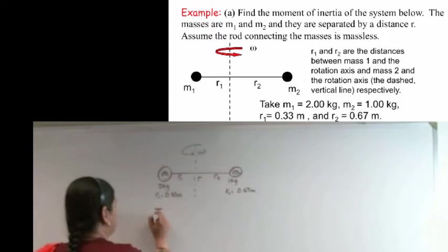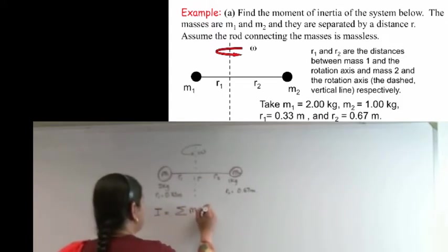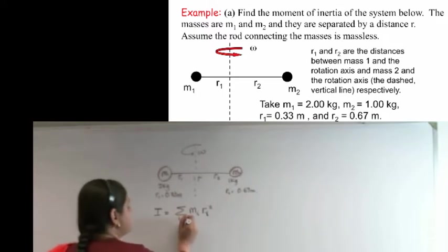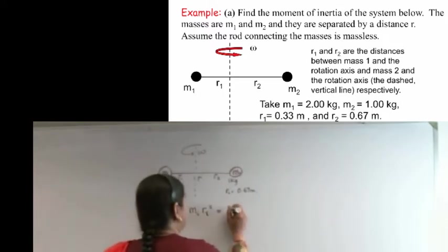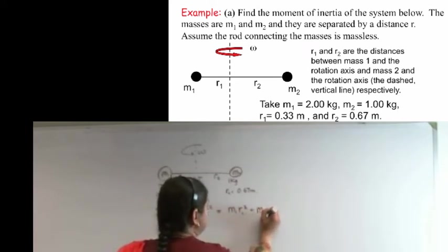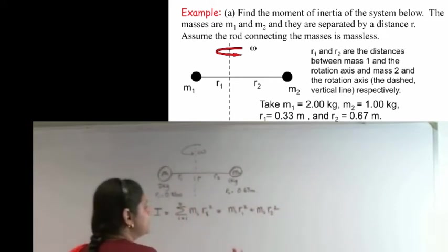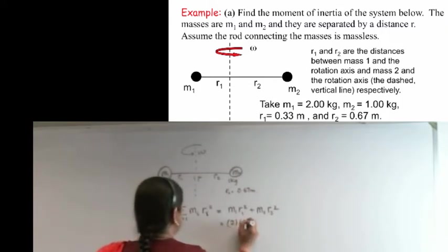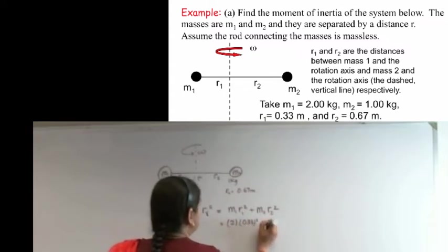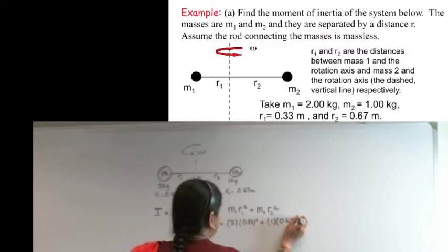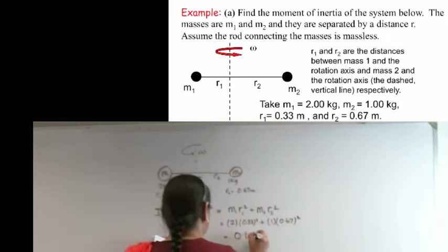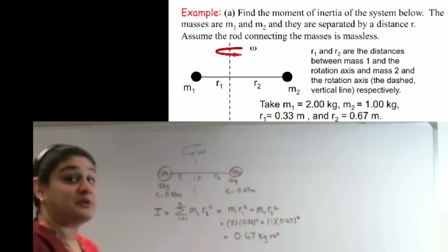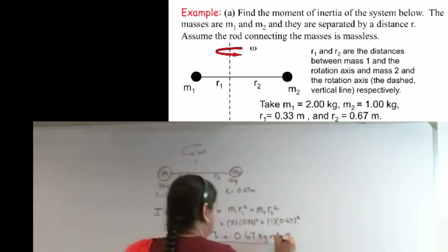So if I was to calculate the moment of inertia, the moment of inertia will be given by the sum of all the masses and all the r's squared. Where the sum is over i, in this case there are two masses, so i will be from 1 to 2. So now I will have m1 r1 squared plus m2 r2 squared, and all that's left is literally to plug in the numbers and solve for it. So in this case it will be 2 times 0.33 squared plus 1 times 0.67 squared. And if you plug it into your calculator, I get 0.67 kilograms meters squared for my answer. So that is the answer to part 1.